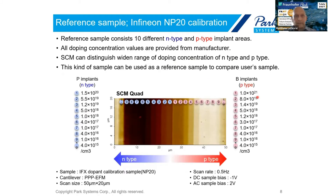As Tomas referred to in the previous talk, the data we actually get out is qualitative, so we need some method to quantify the data. One of the standard methods for this is the doping staircase, which he showed. What I want to show you here is that we actually get a wide range of doping concentrations that we can measure — from 10 to the 20th all the way down to 10 to the 15th.